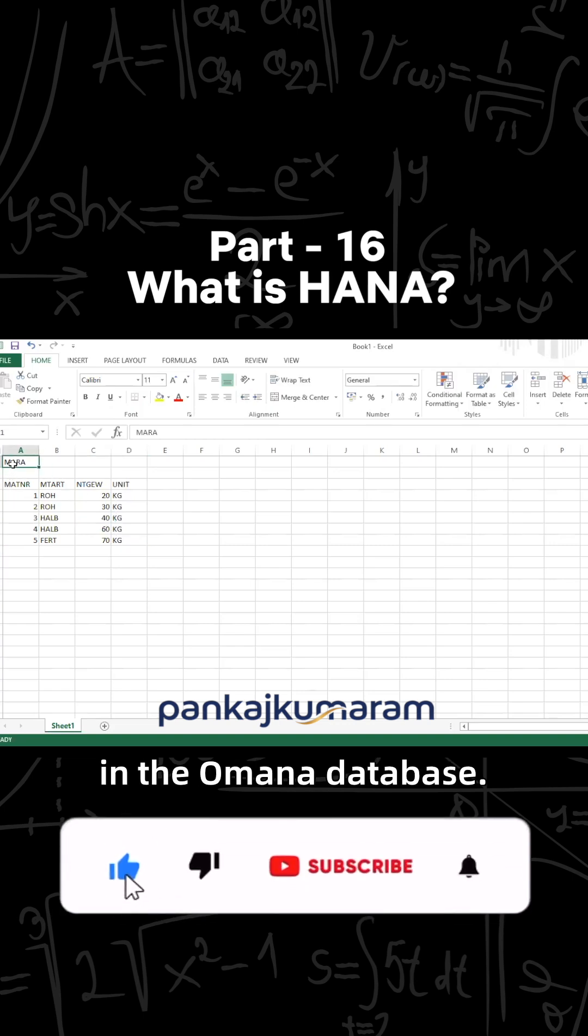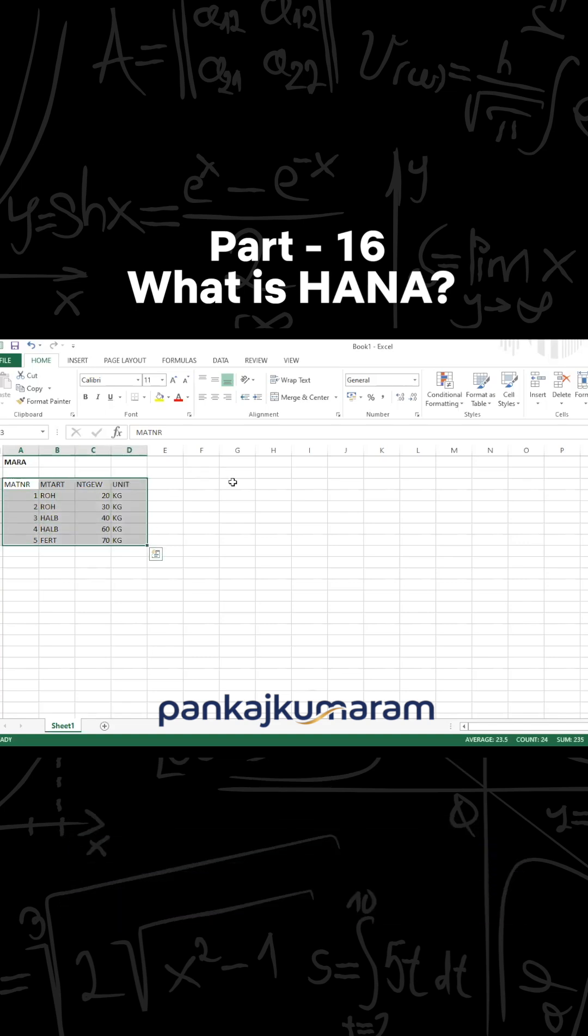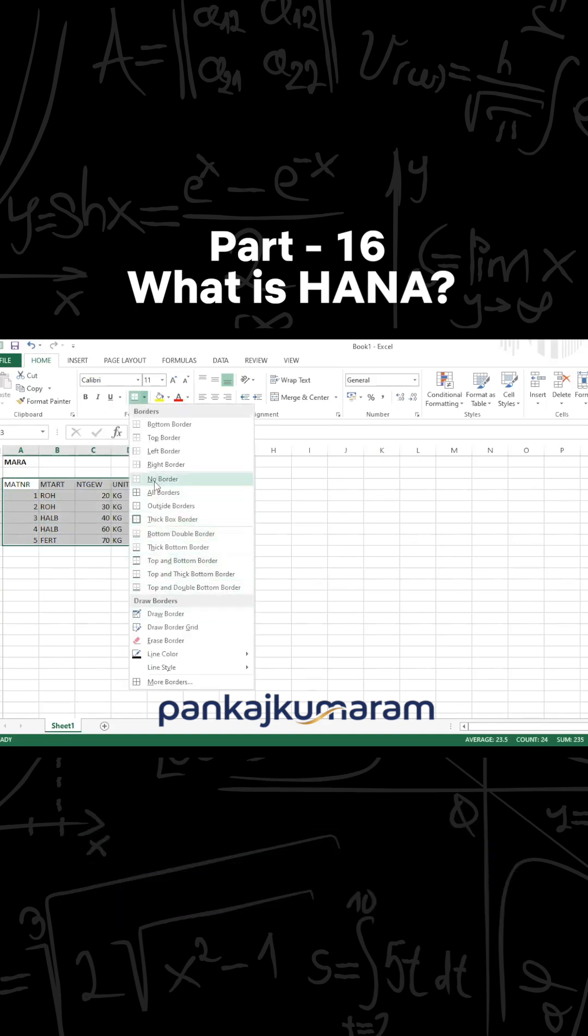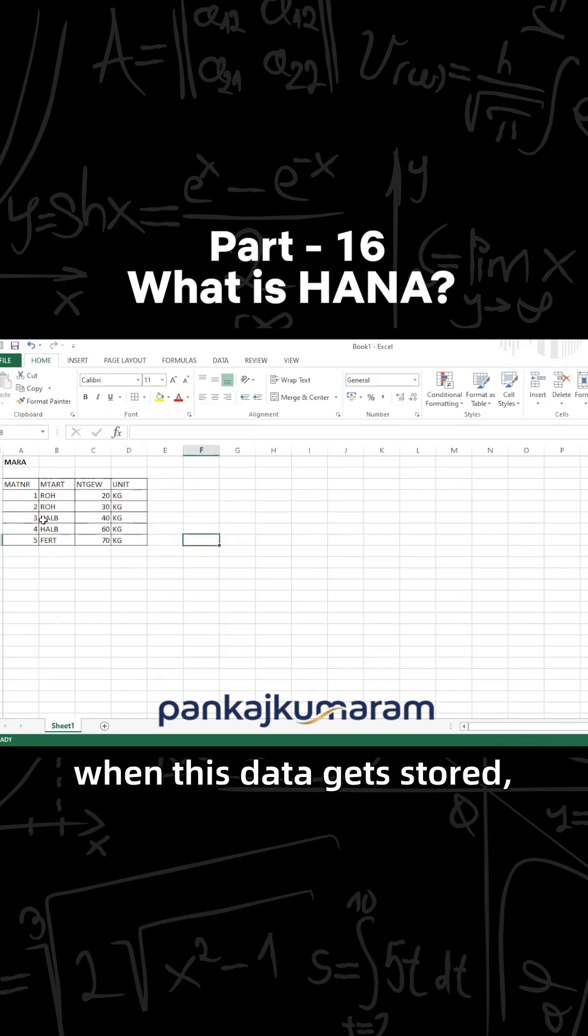When we open the MARA table, we can see the data in this format, right? But actually, when it gets stored in the database, it stores sequentially something like this. Just a second, I'm supposed to press this one.